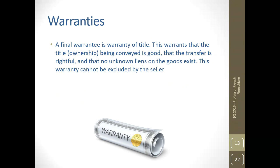A final warranty is the warranty of title. This warrants that the title — the ownership being transferred — is rightful and that no unknown liens on the goods exist. It cannot be excluded by the seller. Warranty of title is typically associated with tracts of land — you do a title search and pay for title insurance. It also applies to automobiles and anything that has a title, or even as an inherent right of ownership to a chattel itself.